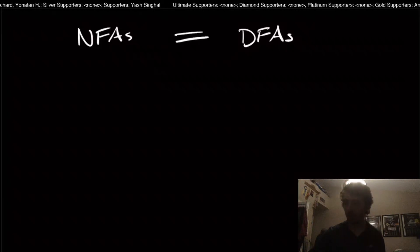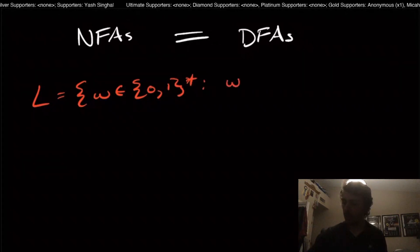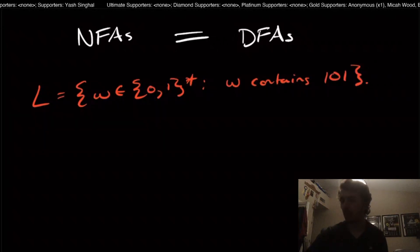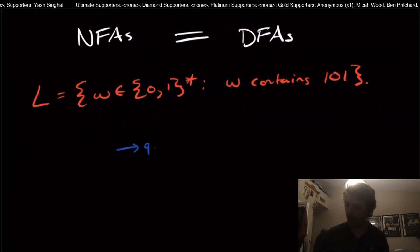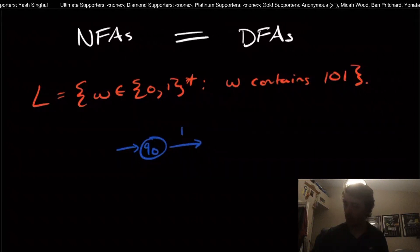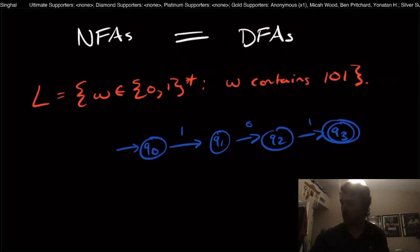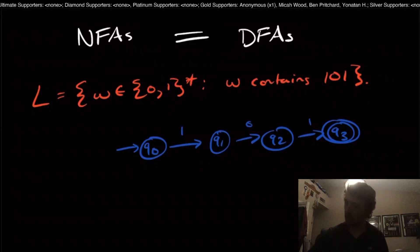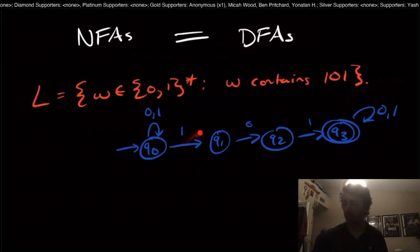So let's motivate this with an example. Let's suppose we have the language L, which is the set of all strings in {0,1}* where W contains 101. Here's a really simple NFA that achieves the job. We have a start state, then transitions on one, zero, and one. If the string W contains 101, once we've read 101 we don't care what we read after, so there's a {0,1} self-loop there. At the beginning there's also a {0,1} self-loop, capturing that anything can go before the 101.